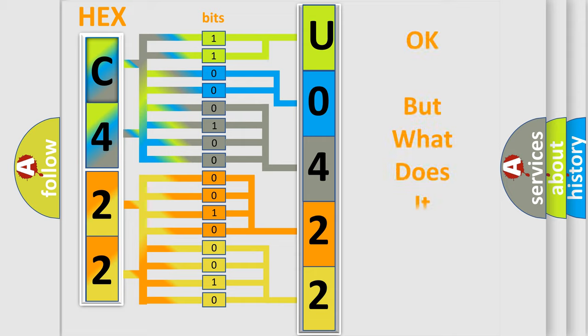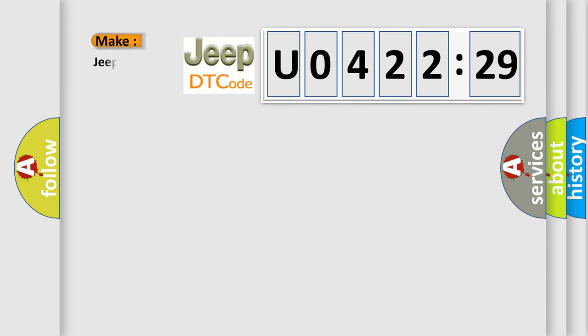We now know in what way the diagnostic tool translates the received information into a more comprehensible format. The number itself does not make sense to us if we cannot assign information about what it actually expresses. So, what does the diagnostic trouble code U042229 interpret specifically for Jeep car manufacturers?